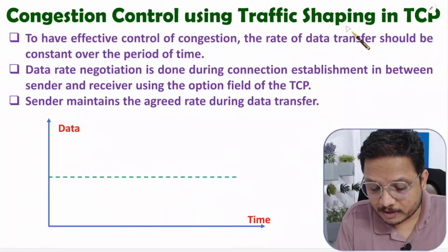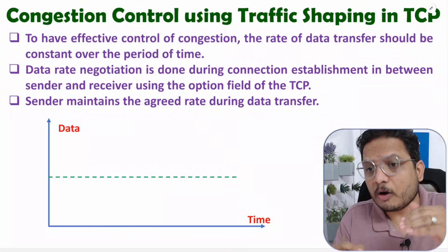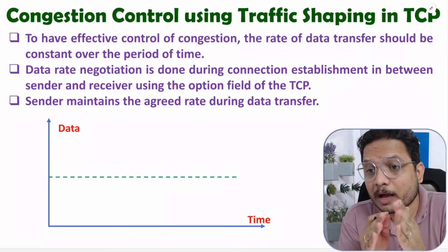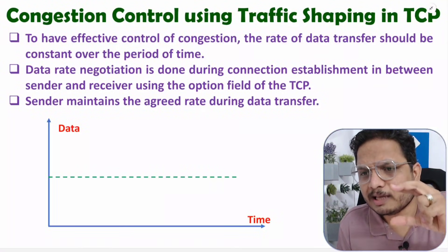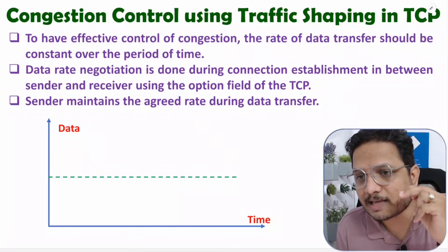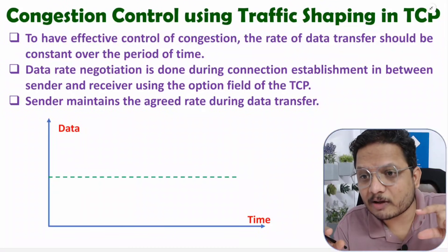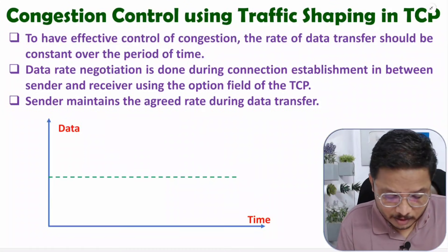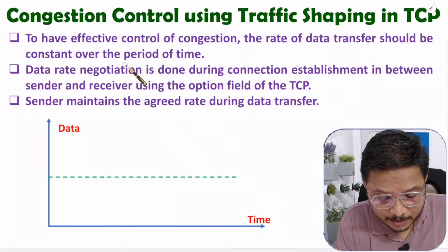Traffic shaping means we provide a constant data rate on the channel — we are shaping traffic at a constant rate. If you have a constant data rate on the channel, you will have proper utilization of the channel and there will be less probability of congestion. Congestion happens because of randomness in data rate on the channel. So for effective control of congestion, the rate of data transfer should be constant over the period of time.